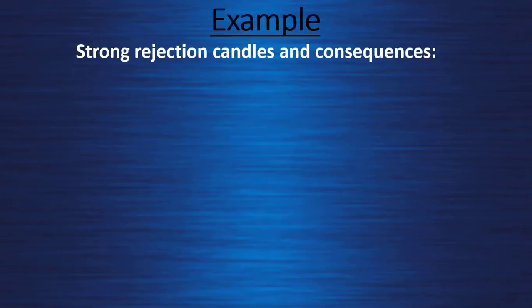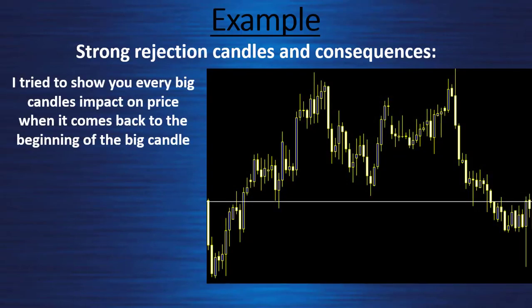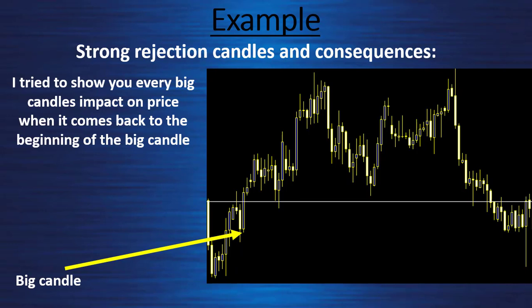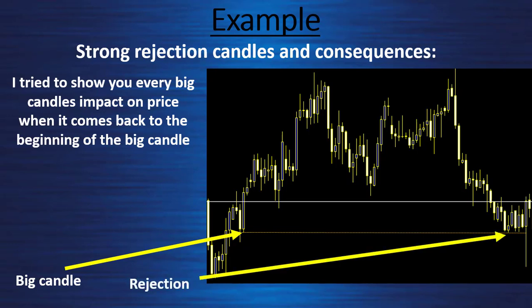On this specific chart I tried to show you every big candle's impact on price when it comes back to the beginning of the big candle. To set your support and resistance line you will use the average of the week, as shown in the previous lesson. First example: we have a very big candle creating a turning point. I draw a yellow dotted line, and when price comes back to it, it rejects. Second big candle from a turning point — I draw my yellow line at the average of the week, and when price comes back to it, strong rejection.